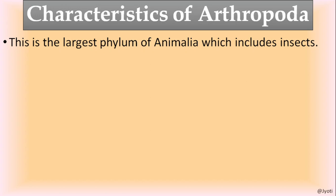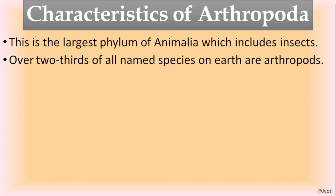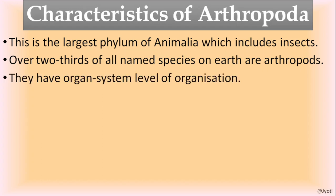Let us discuss the characteristics of Arthropoda. This is the largest phylum of Animalia, which includes insects as the dominant group. Over two-thirds of all named species on Earth are Arthropods. They have organ system level of organization - starting from Nemathelmintha, the organs are associated together to form specific systems which perform specific functions.